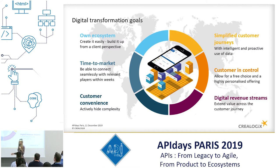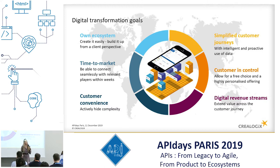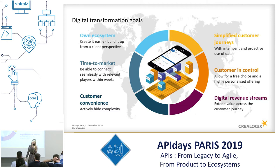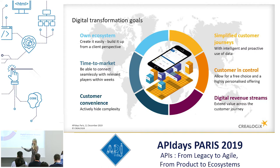Within an ecosystem, you can differentiate value propositions not only towards the customer but also among different players. There are more possibilities to be a bit different. Looking at what banks want to achieve from customers: customer convenience, hiding the complexity, and a simplified customer journey — all things you've probably seen in other industries.